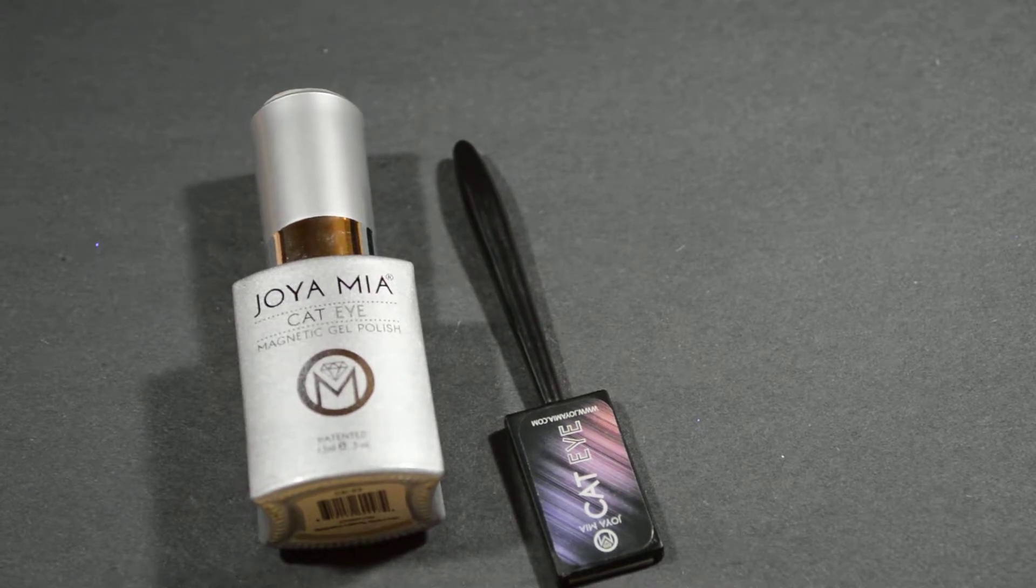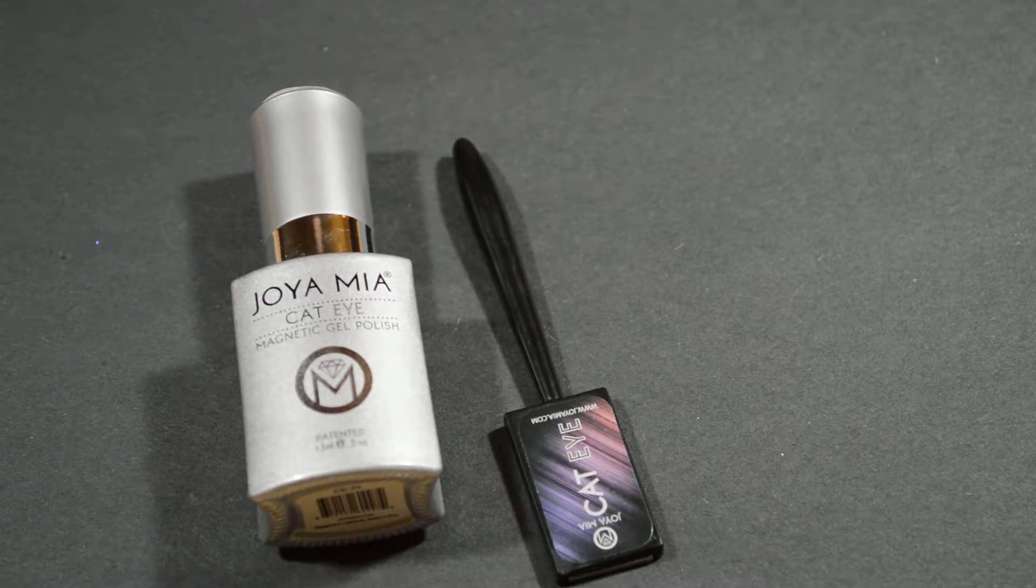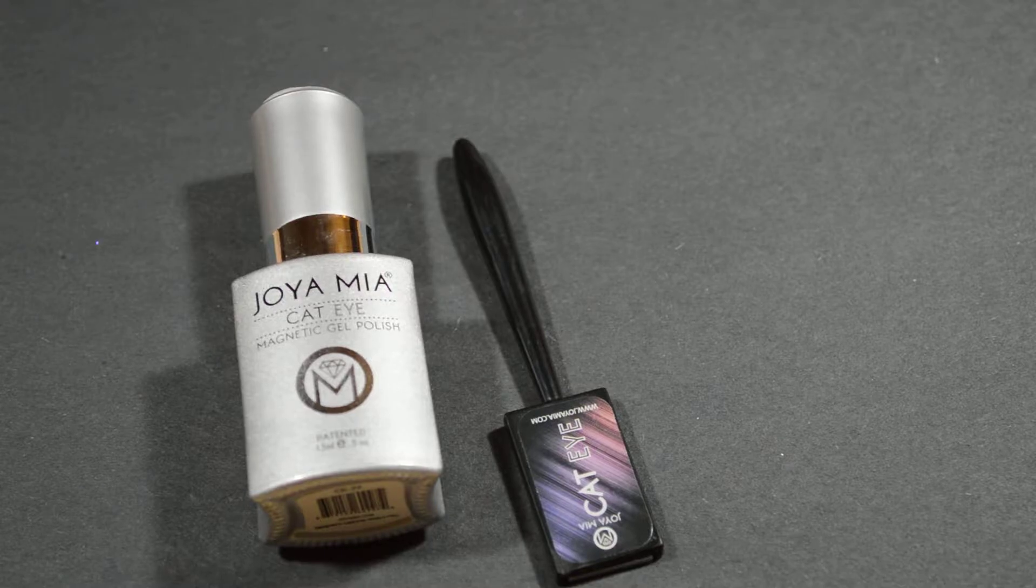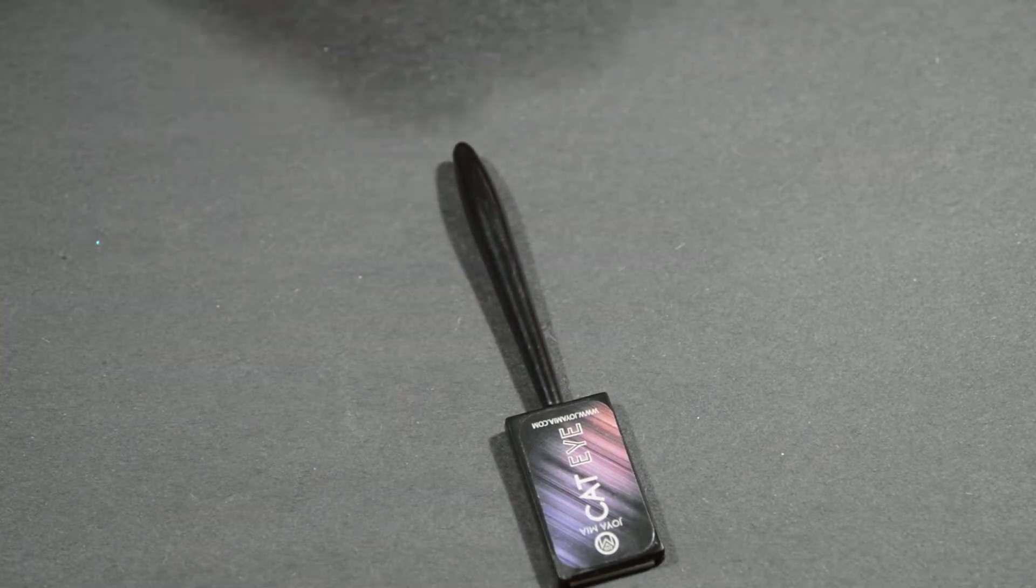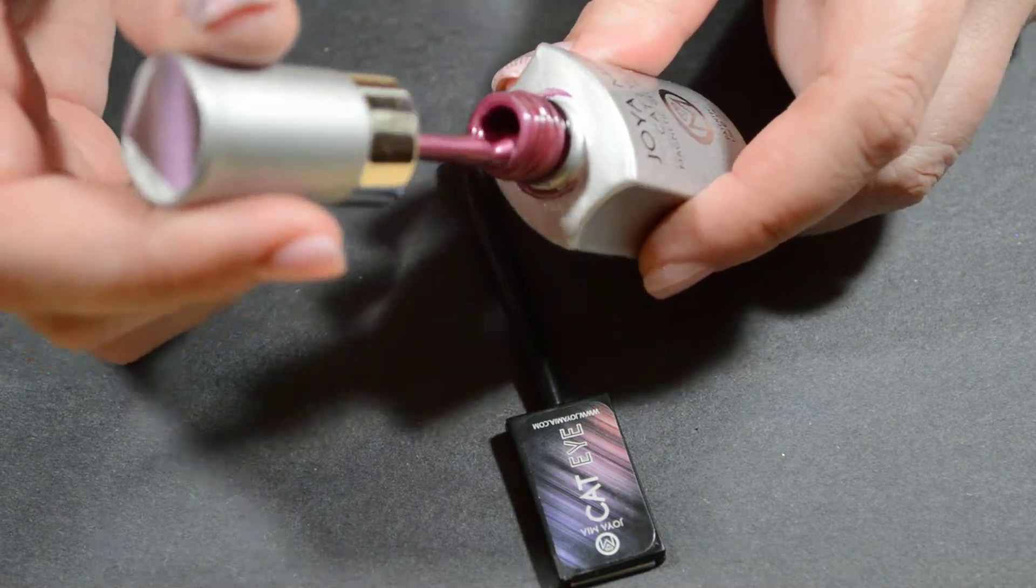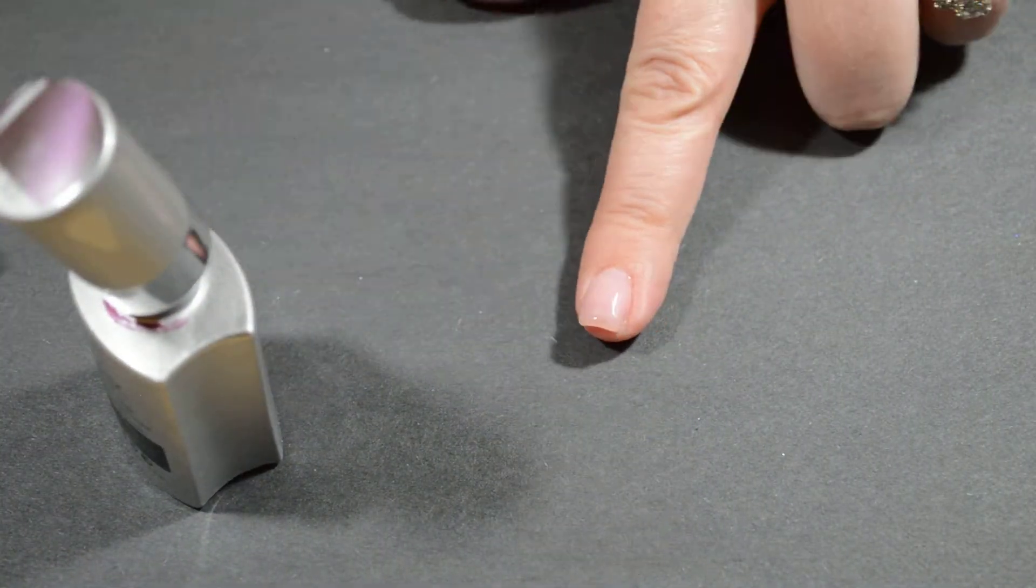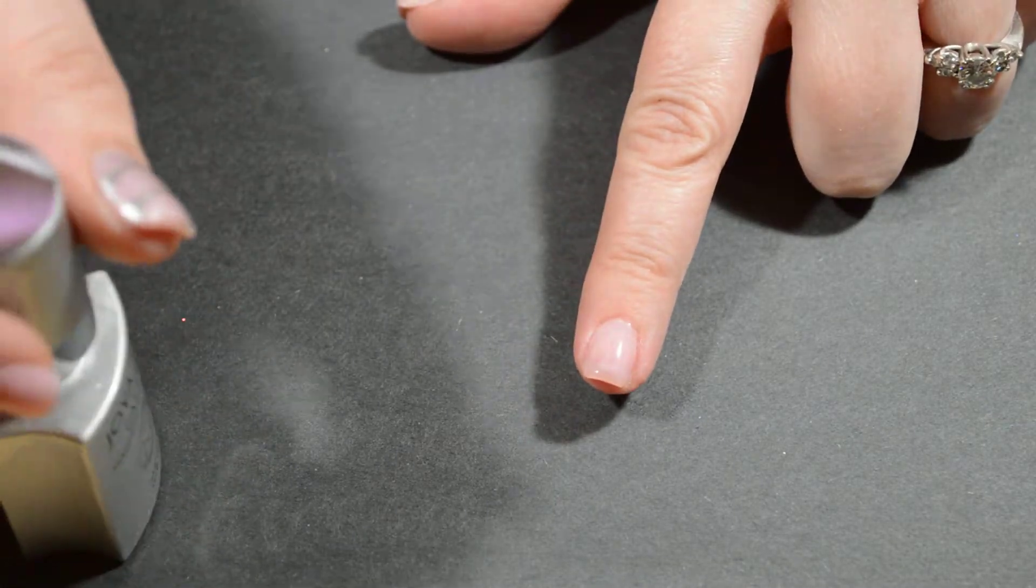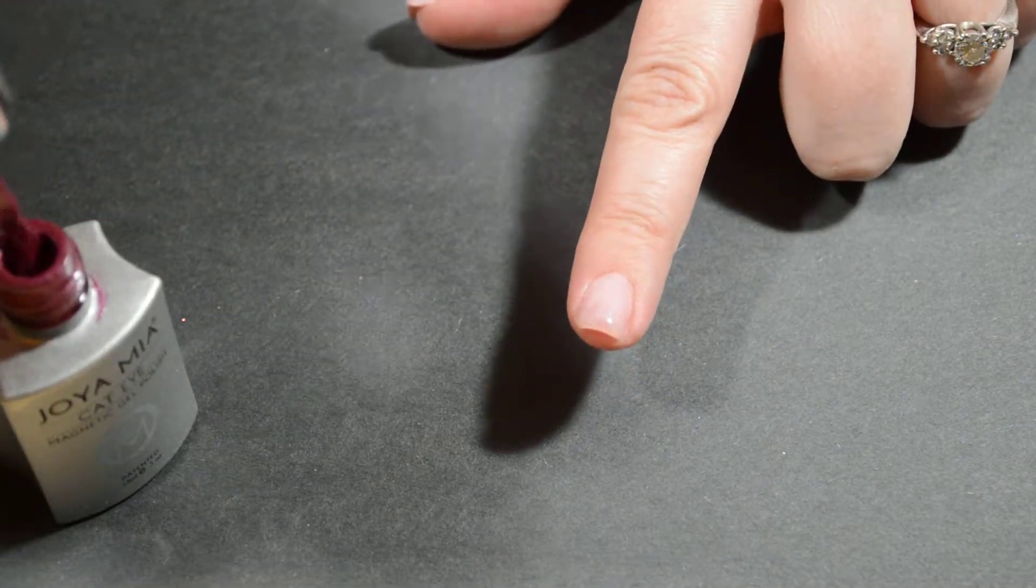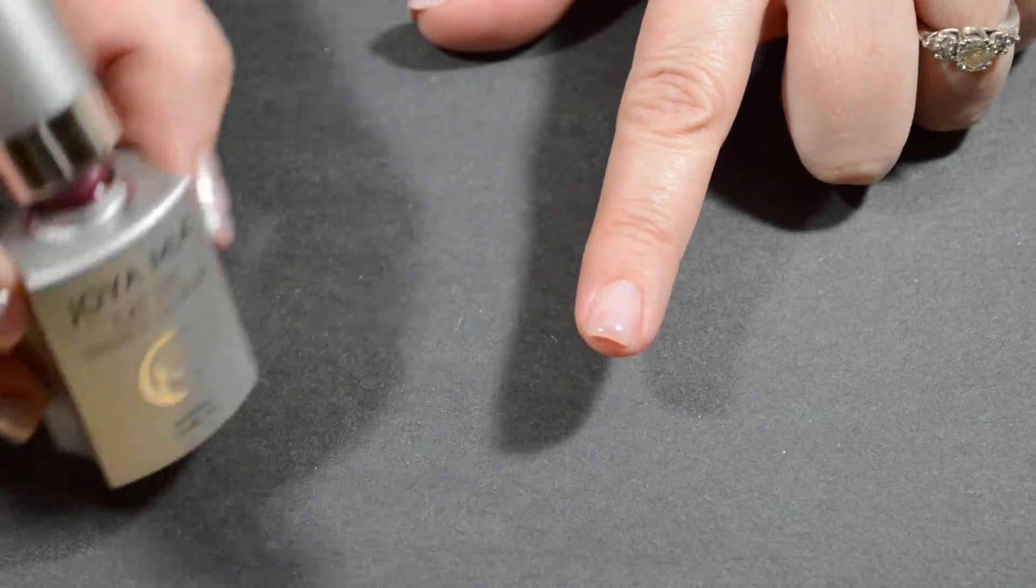Hello everyone, in this video I will be demonstrating how to do a cat eye gel polish. The color I'm using today is this really pretty pink color. If you are not very familiar with the cat eye, it is a magnetic polish. I'm using the Joyamia brand which I really enjoy. The bottles are really nice and the color is really good.